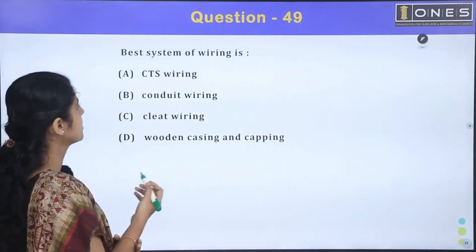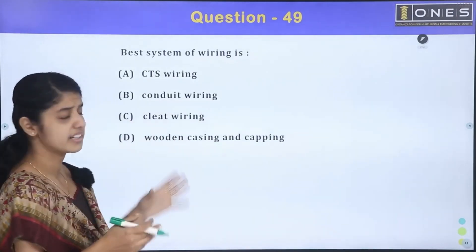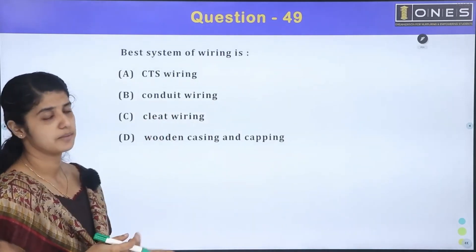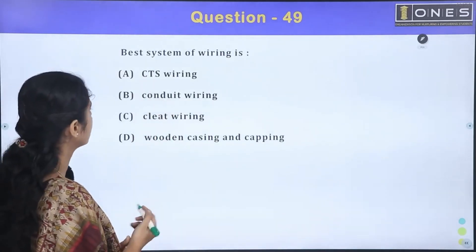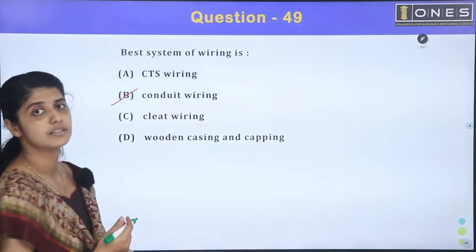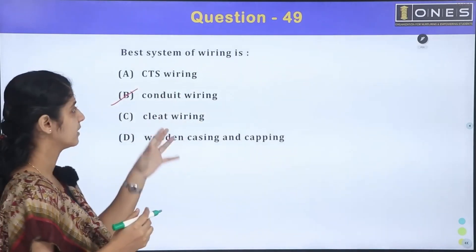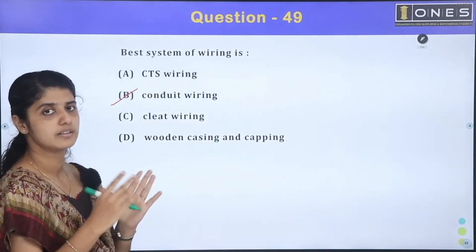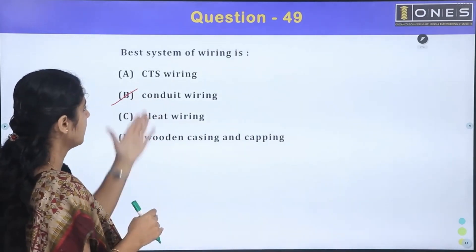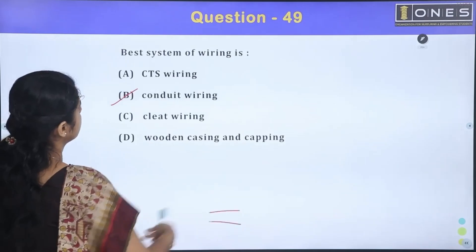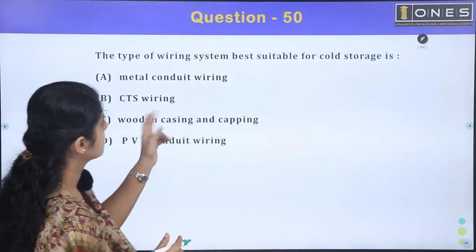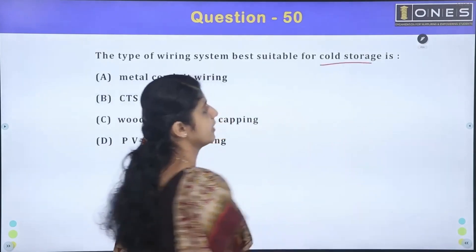The best system of wiring. There are different types of wiring like cleat wiring, conduit wiring, capping and casing. I will say the best system of wiring is conduit wiring. If we use conduit wiring, we use PVC.